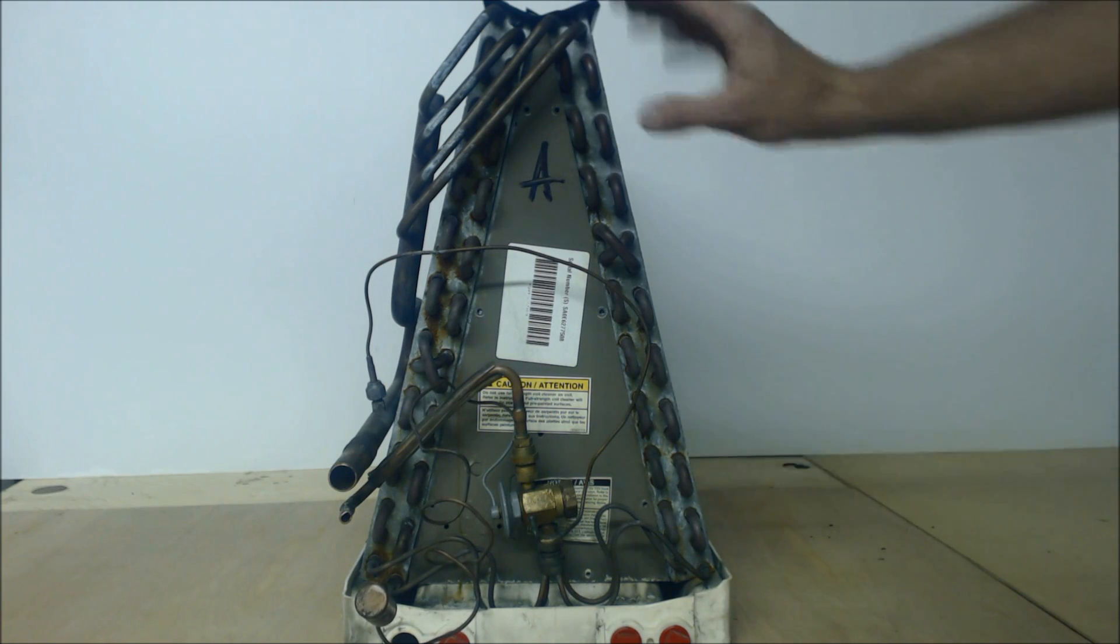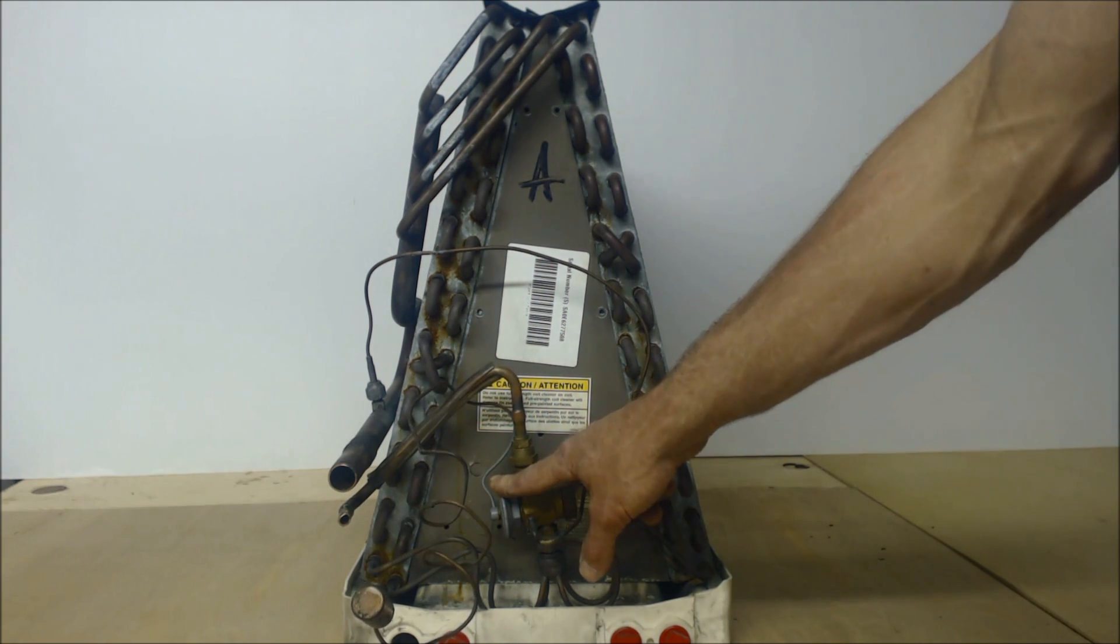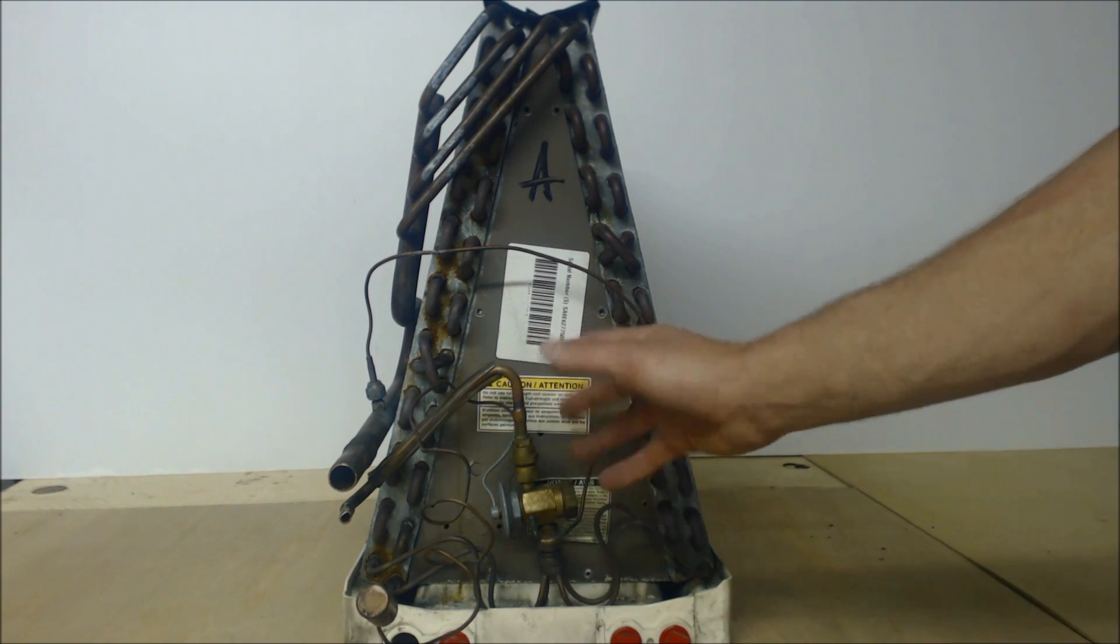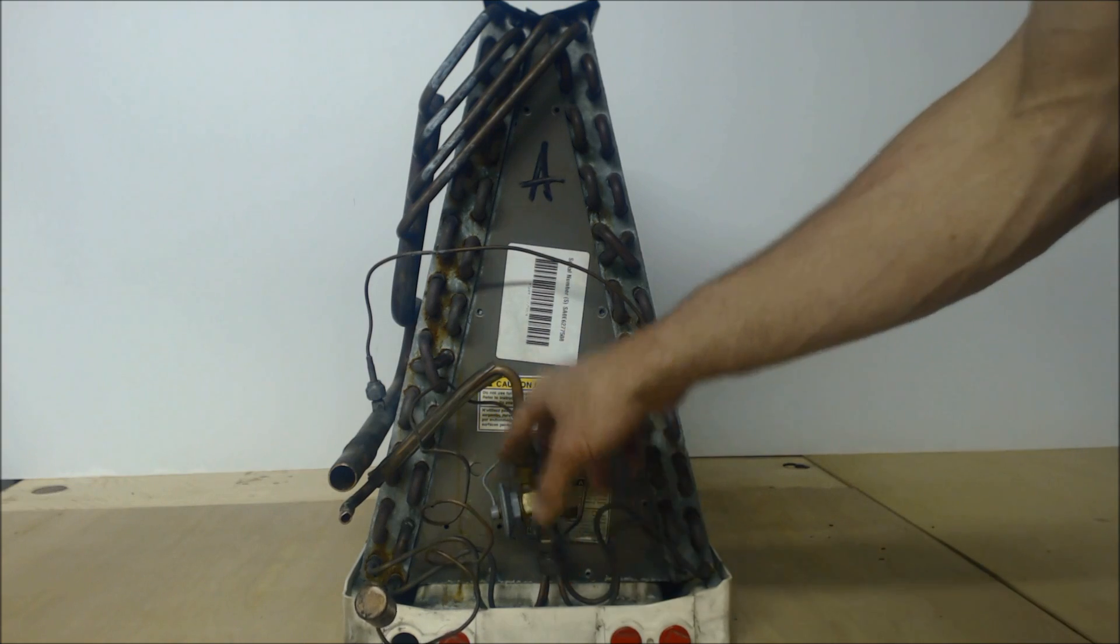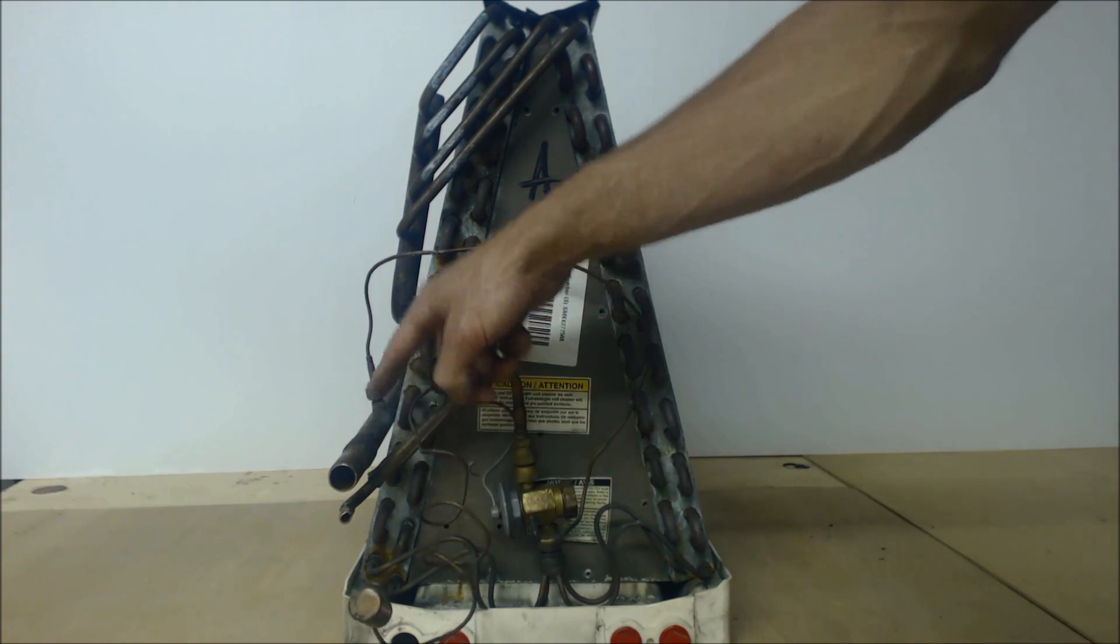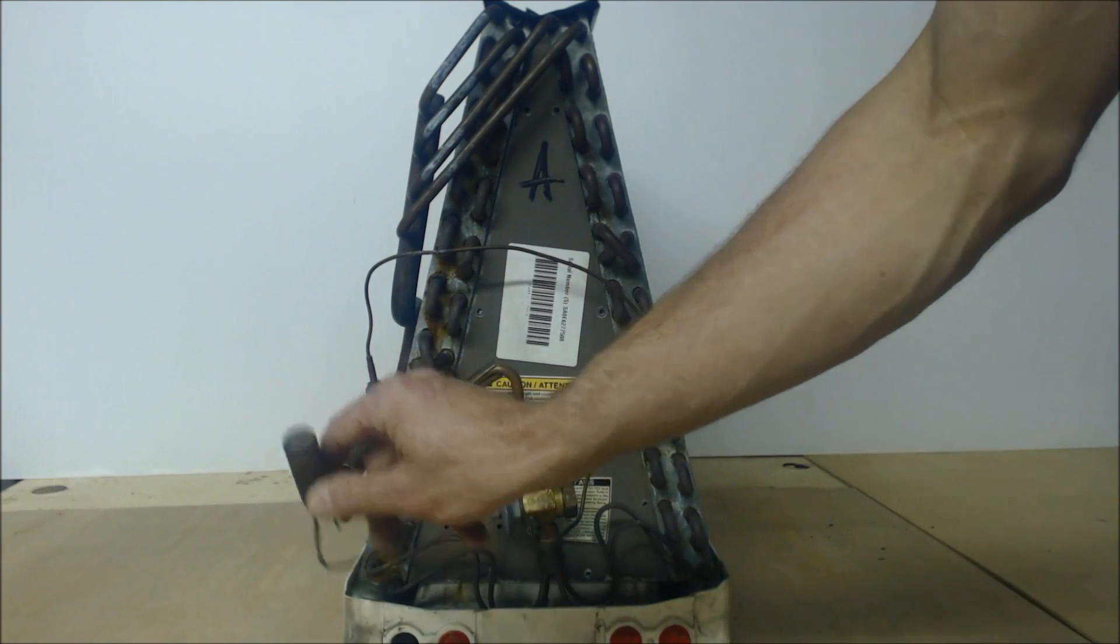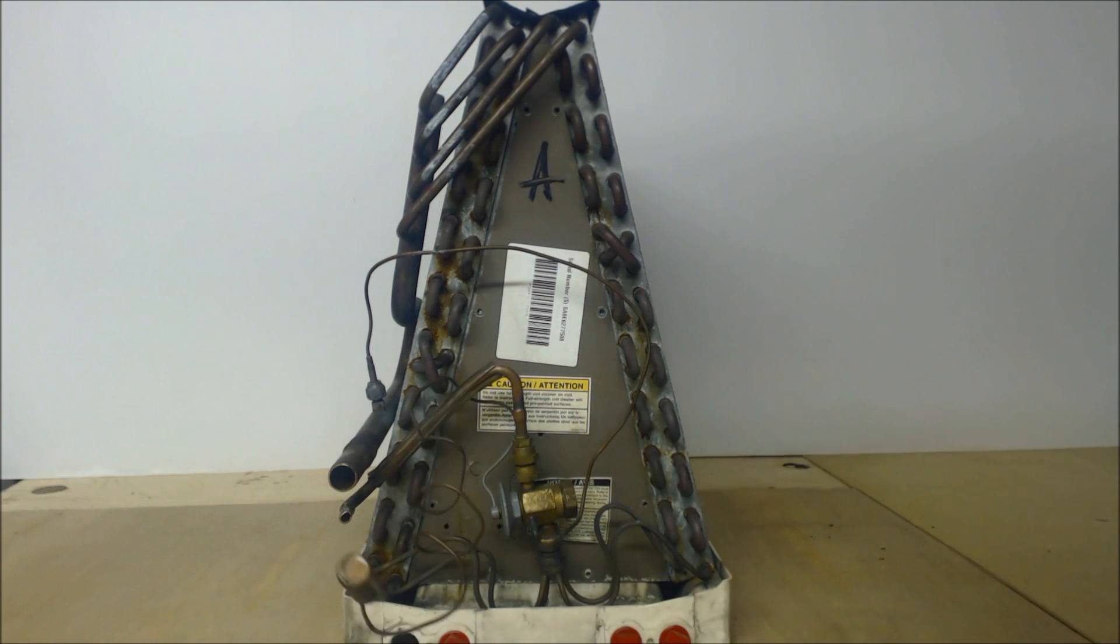The thermostatic expansion valve has more play as far as refrigerant charge goes because it's always trying to maintain 14 degrees of superheat. It reads the pressure right here, and you have a bulb also reading the pressure attached onto the suction line.